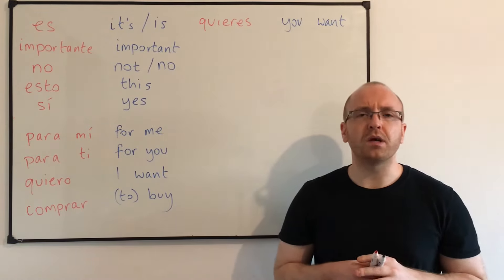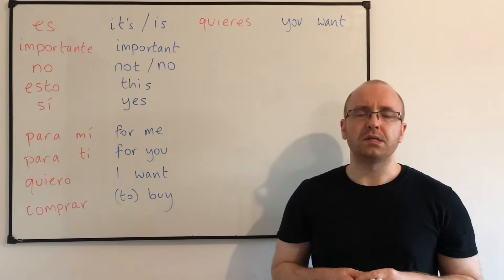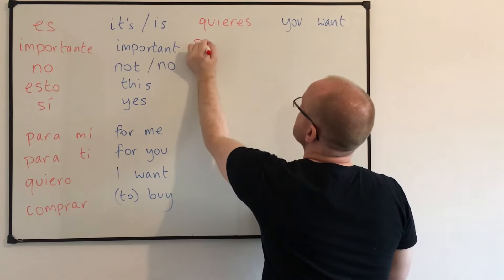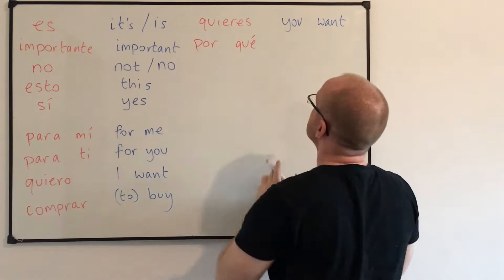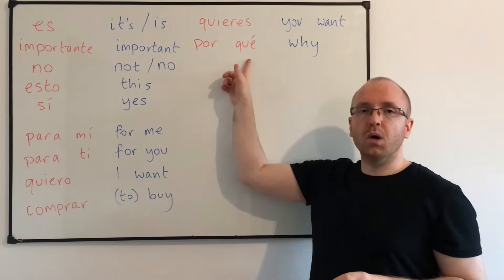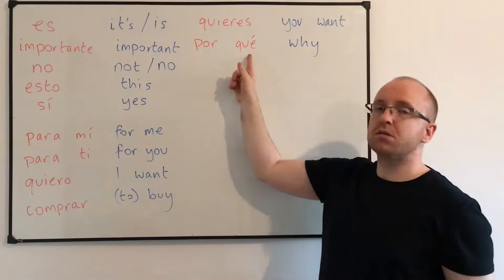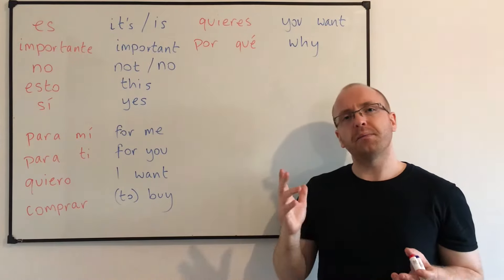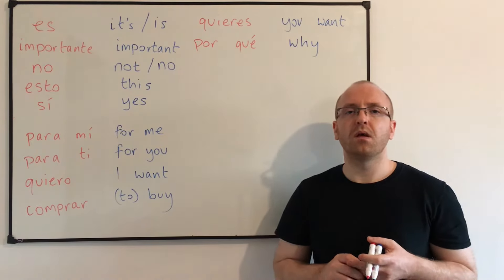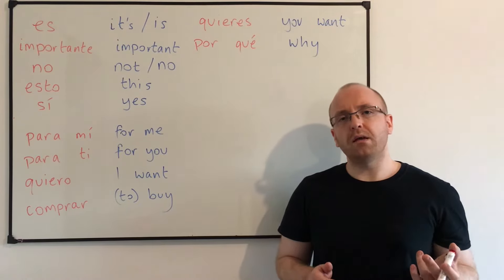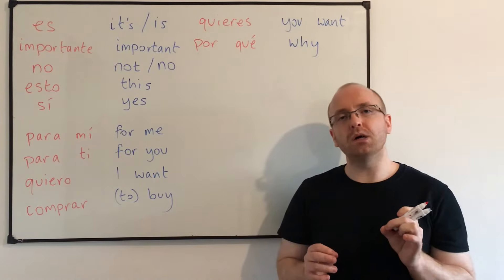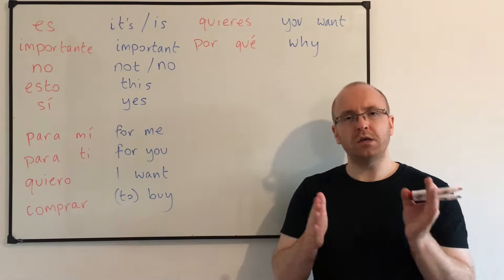So another useful word for forming questions is the word for 'why,' and that's 'por qué.' Por qué. You'll notice it's two words — they literally mean 'for what.' So, 'por qué.' Can you say that for me? Por qué. Brilliant. To say 'why do you want to buy this?' — remember, there's no word 'do' in Spanish. So we say 'why you want to buy this?'